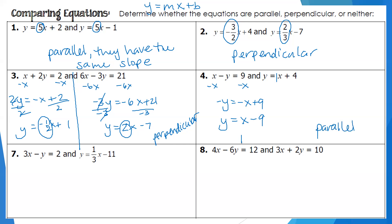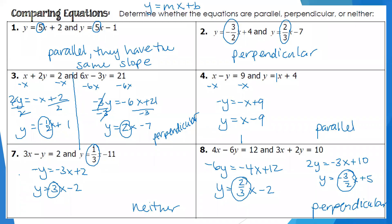Try numbers 7 and 8. For number 7, the slopes are 3 and one-third. Even though they are reciprocals, they're not opposite reciprocals — both are positive — so the answer is neither. For number 8, the slopes are two-thirds and negative three-halves. They are opposites and reciprocals, so these two lines are perpendicular.